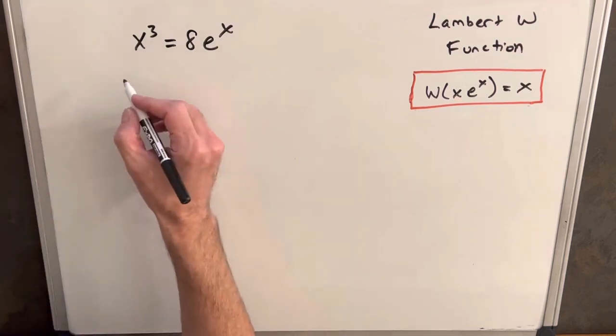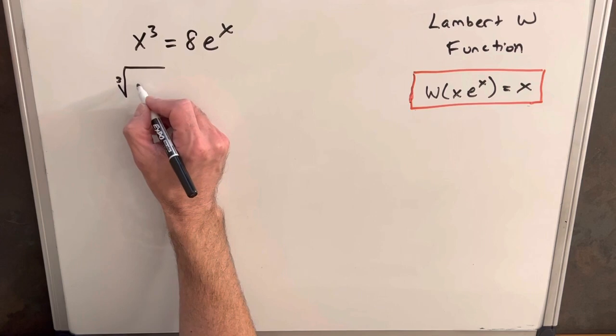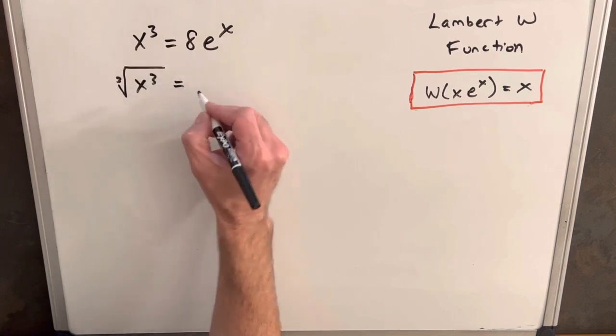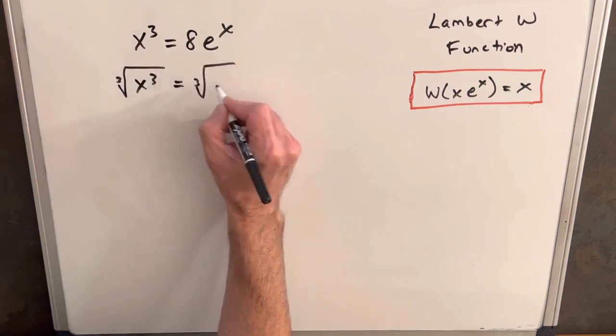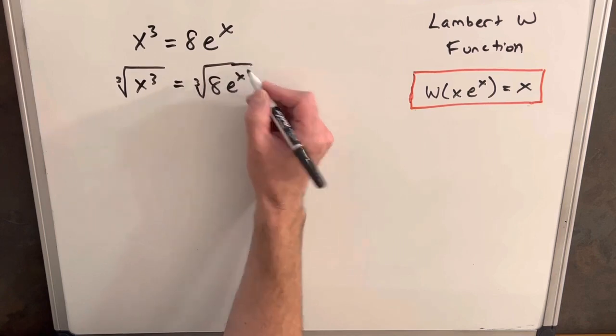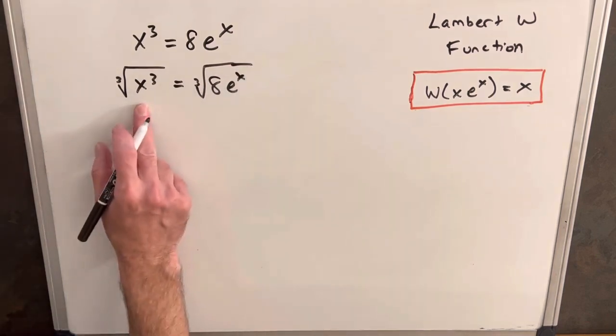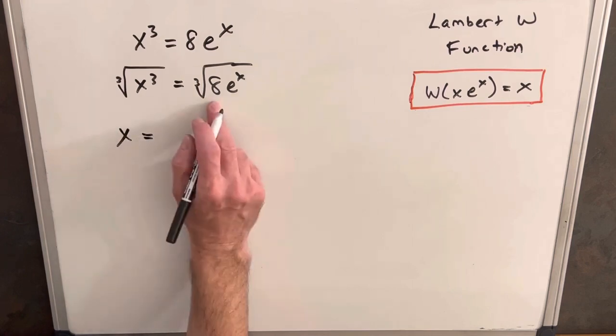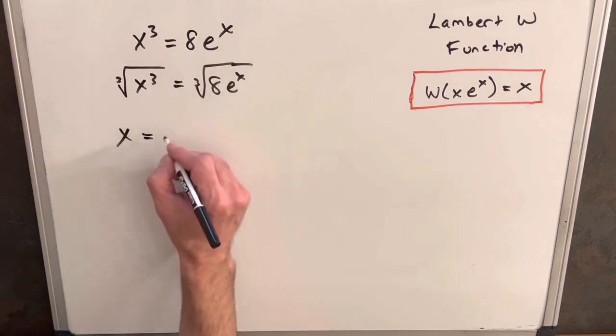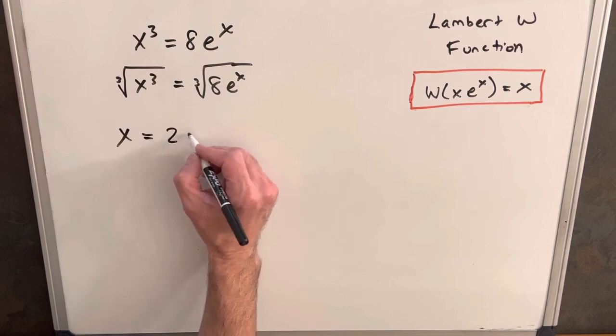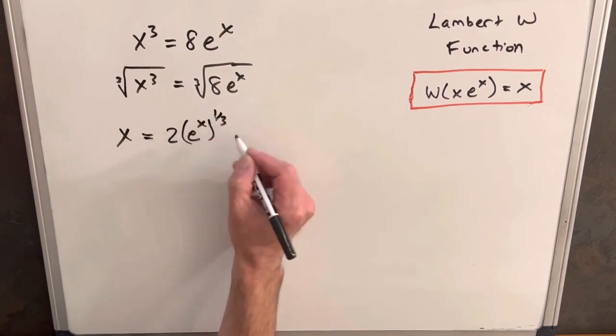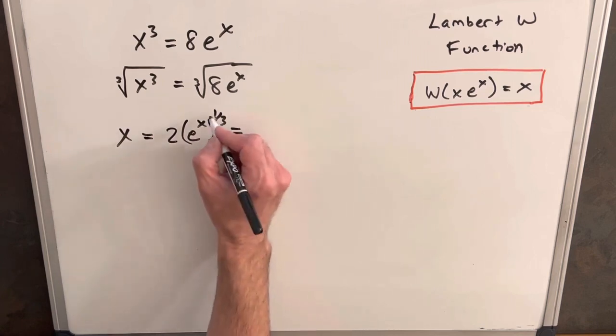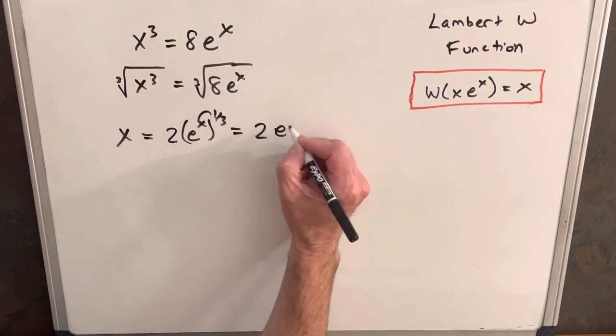Let's take the cube root on both sides. Cube root of x³ equals cube root of 8e^x. On the left side, the cube root of x³ is just x. On the right side we can split these up, so the cube root of 8 is 2. Let's write this as one-third, so when we distribute this we end up with 2e^(1/3 x).